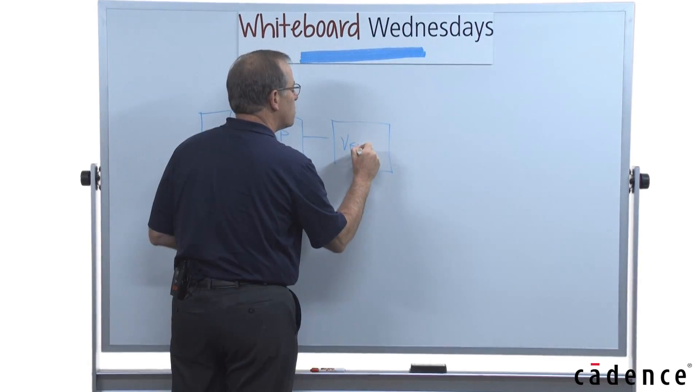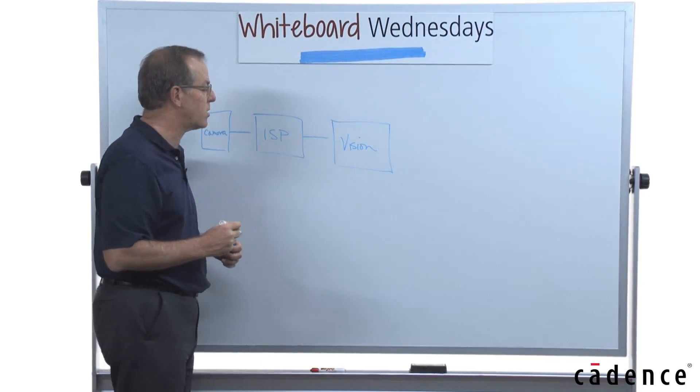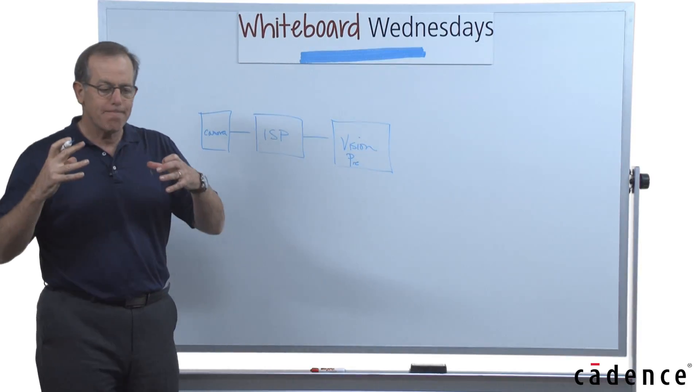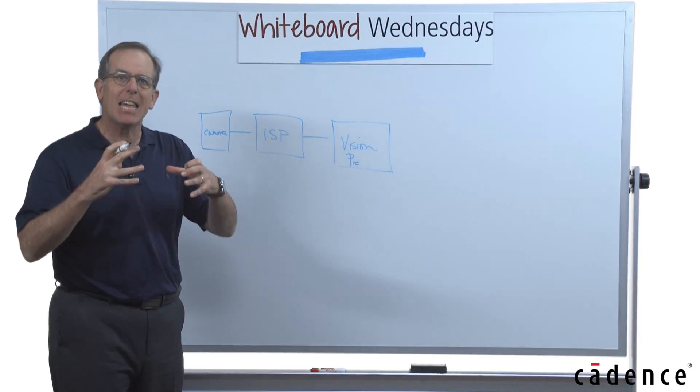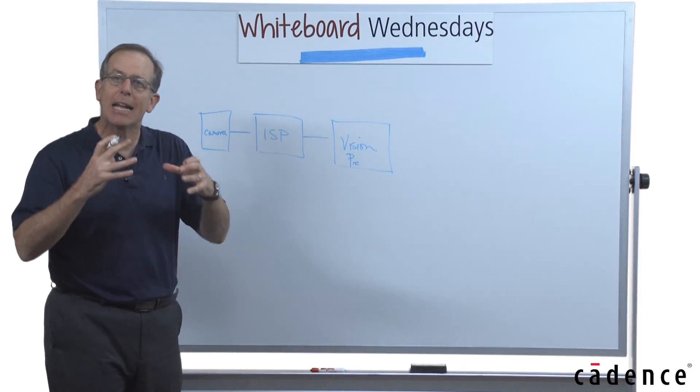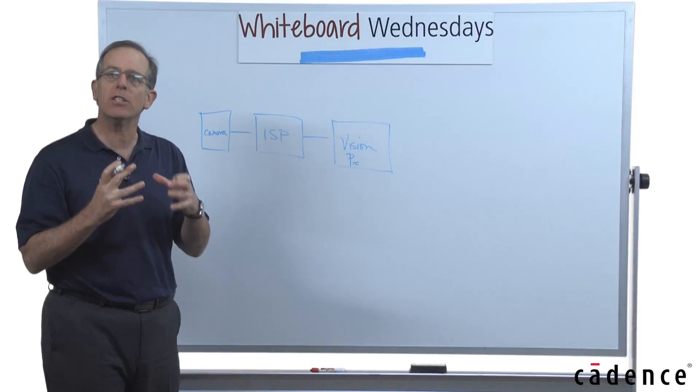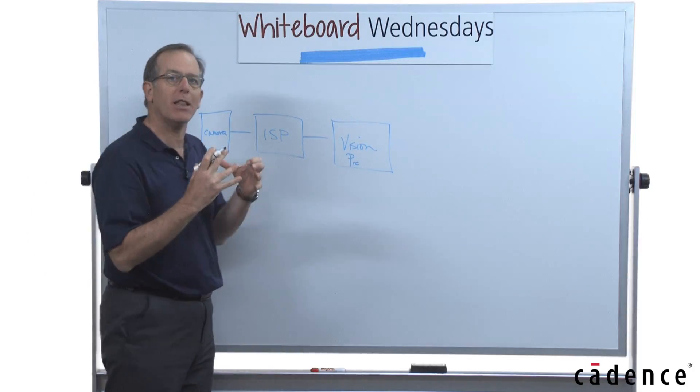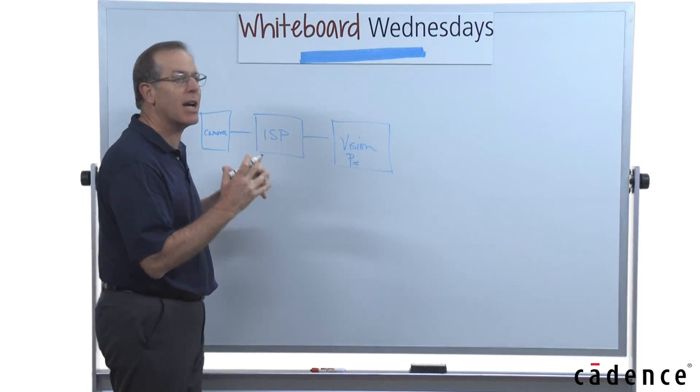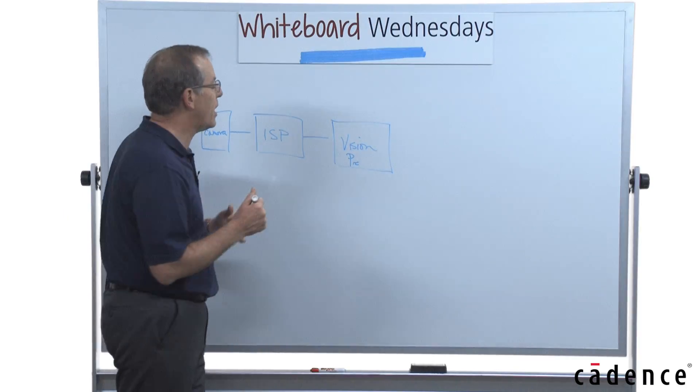And then we come into a vision system. And in fact, we can split the vision system into two parts. There's a pre-processing stage in which we get the data in the scale, in the format, and extract out the regions of interest.